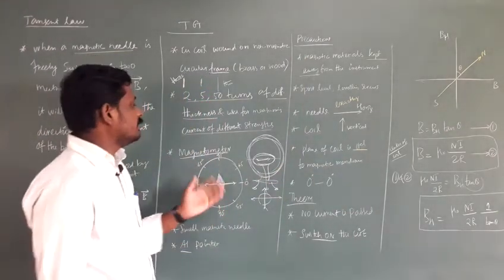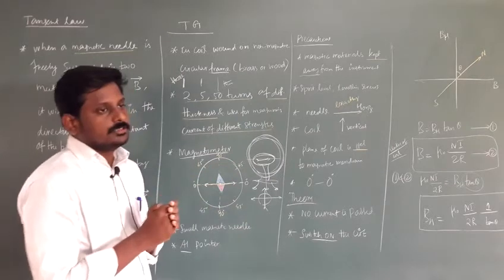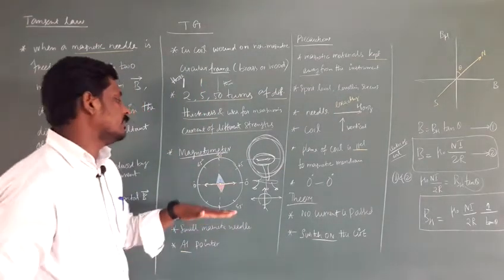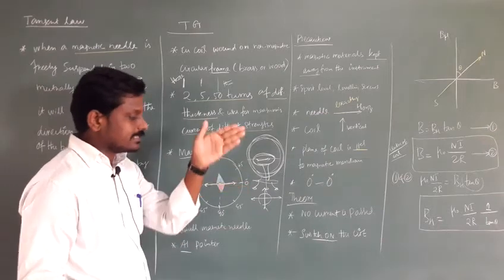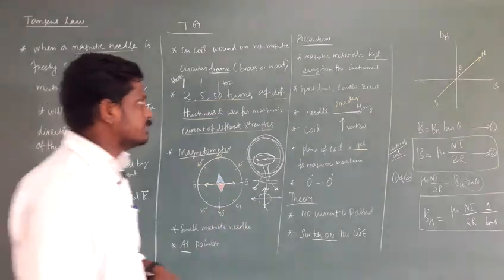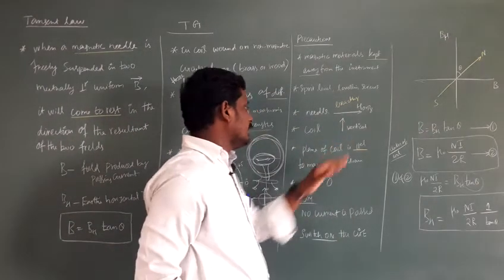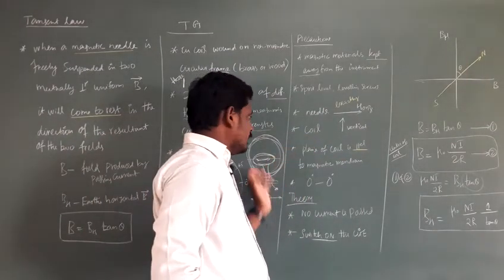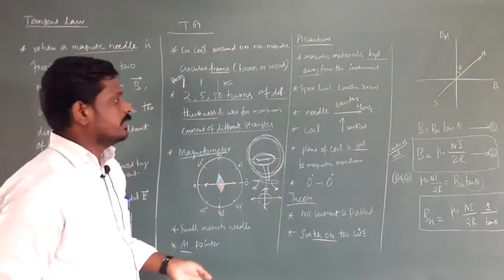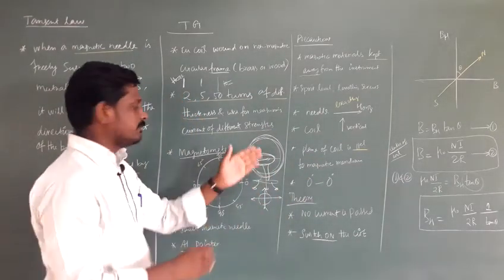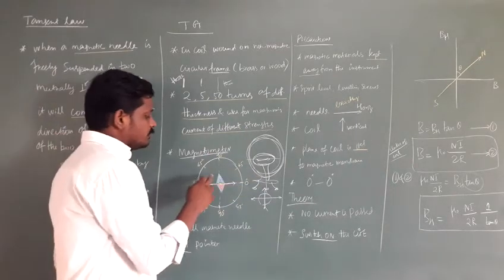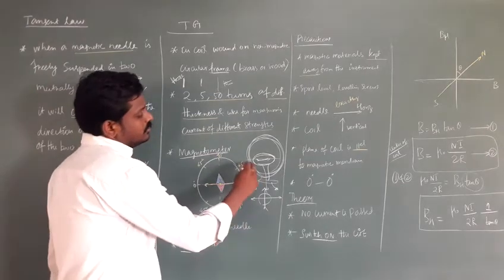The precautions are: magnetic material should be kept away from the instrument during the experiment. There is a spirit level and leveling screws — the spirit level maintains the instrument exactly horizontal, and three leveling screws make the instrument surface horizontal. The magnetic needle should be exactly in the horizontal direction. The circular coil must be exactly parallel to the magnetic meridian — that is, the plane of the coil is parallel to the magnetic meridian. The aluminum pointer should show 0 degrees, 0 degrees.